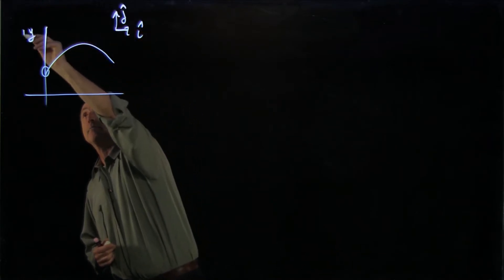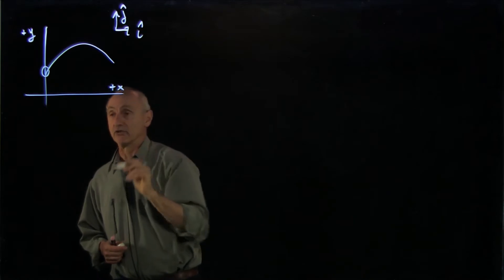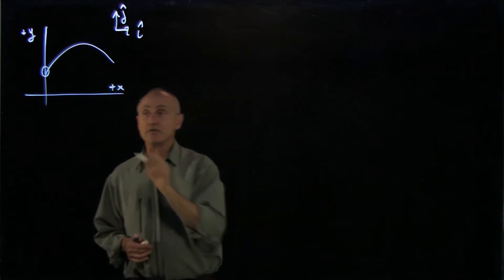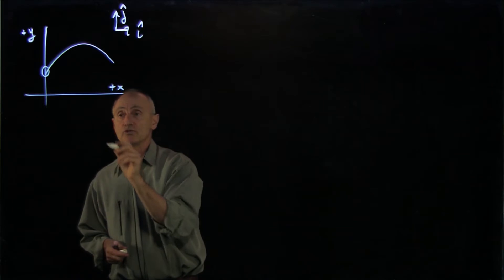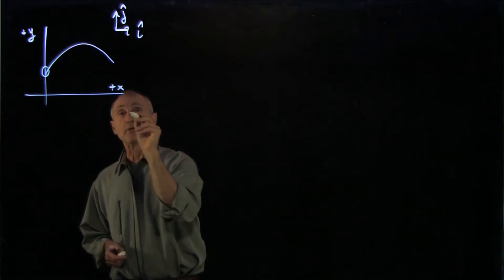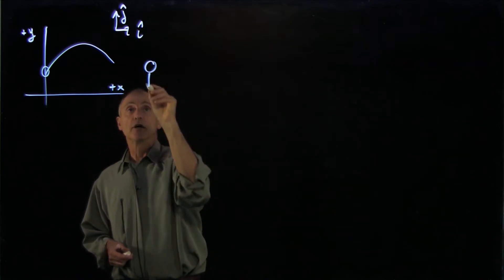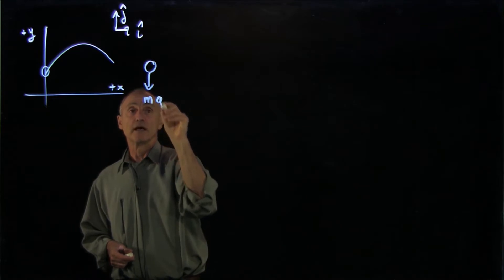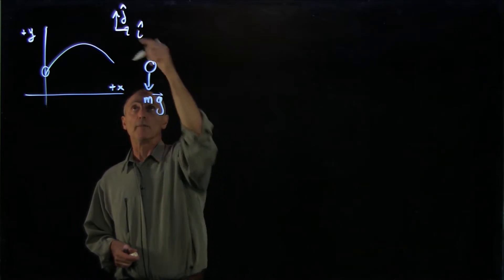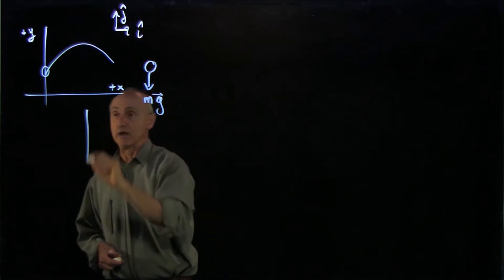Here's our plus y-axis and our plus x-axis. In order to understand the kinematics of this motion, we'd like to apply Newton's second law. So separately, we'll draw our object. It has gravitational force acting downward. Remember, our unit vector is in the j-hat direction.